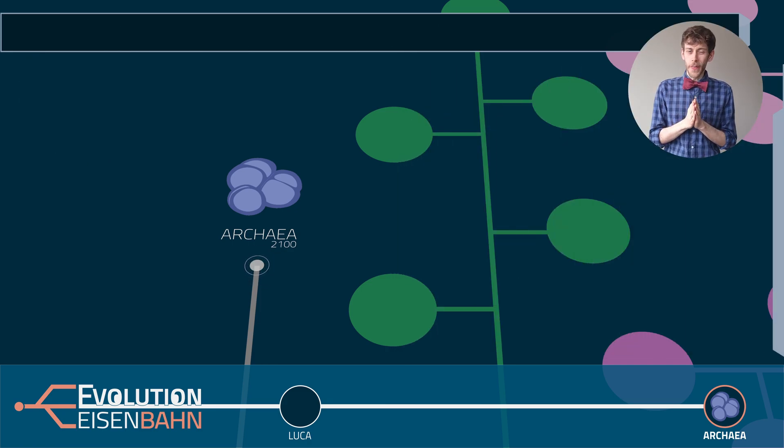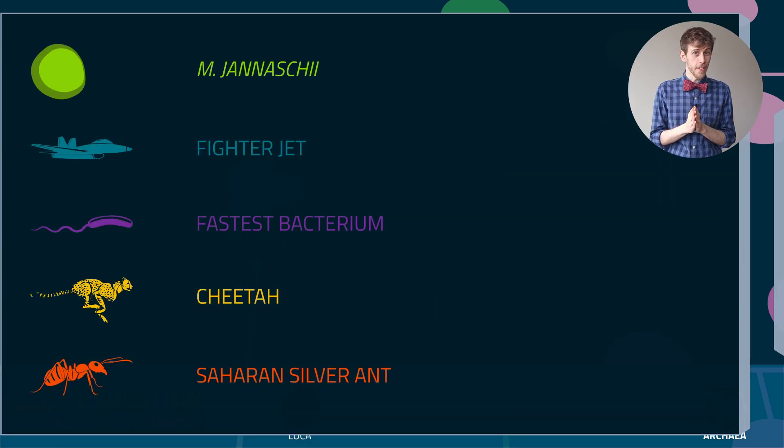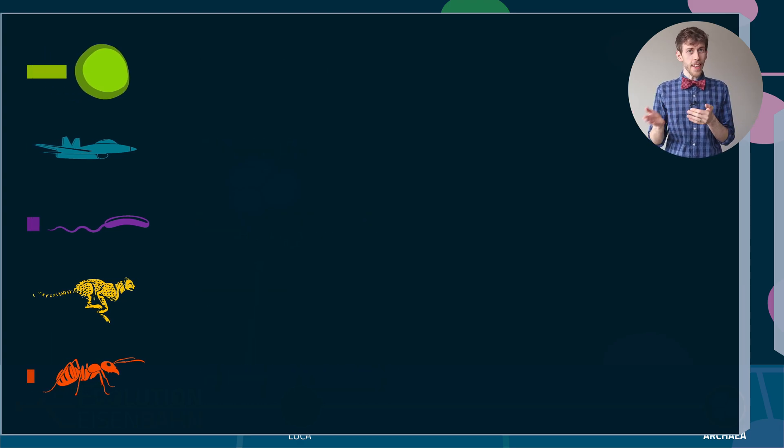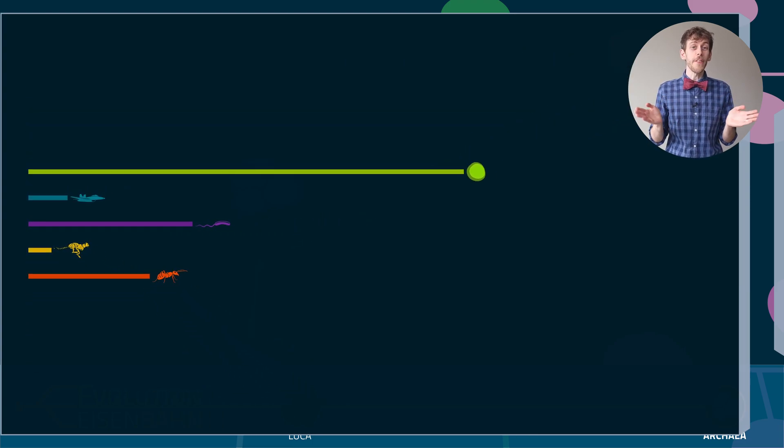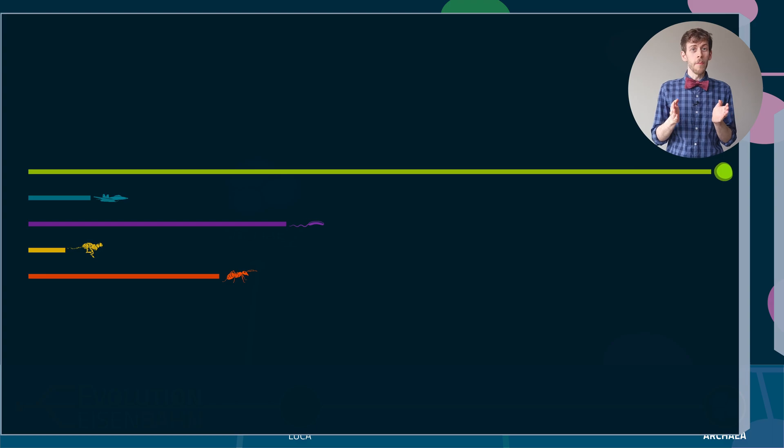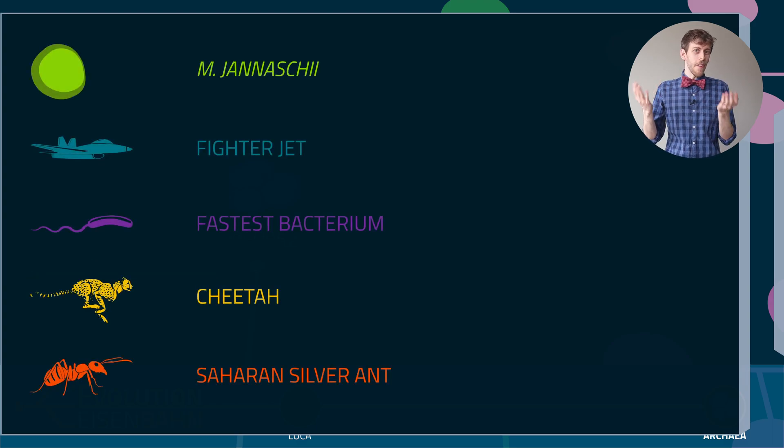Oh, and did you know that the fastest living being on this planet is an archaeon too? If you measure speed by body length per second, which is a fair way to compare speeds, the archaea take the gold medal. And it's not even close. The archaeon M. Genasii is way faster than, for example, the fastest bacteria or animals or fighter jets.